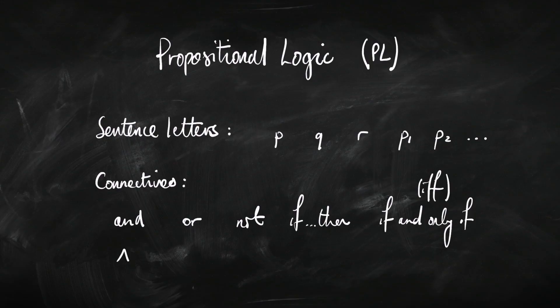Each connective has a shorthand symbol. For 'and' it looks like this; for 'or' it looks like this; for 'not' it looks like this; for 'if-then' it's an arrow; and for 'if and only if' it's an arrow going in both directions.